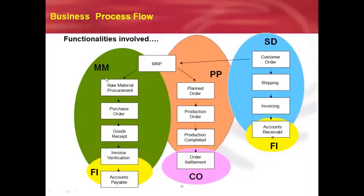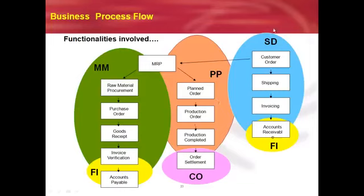Coming from Materials Management — right from raw material procurement up to accounts payable: creation of purchase order, goods received, invoice received, accounts payable handled by finance. From MRP, if the company has stocks, go for planning, production, and costing handled by controlling. When the finished material is ready, sales activities come in: the company delivers material to customers with shipping, loading, unloading, and billing — handled by finance.